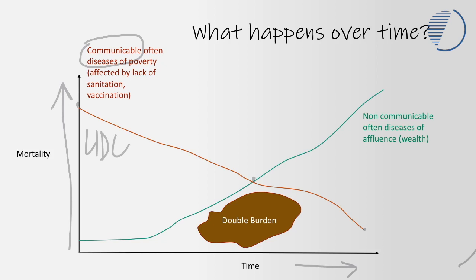As a country becomes wealthier, it will often invest more in vaccination campaigns and become more efficient in delivering health services, while lifestyle factors linked to non-communicable diseases start to kick in. A country in this middle position, like Egypt, has to deliver support for people with both non-communicable and communicable diseases — described as having a double burden in terms of health service provision.